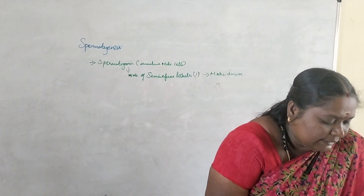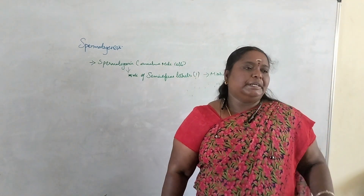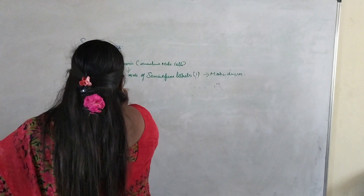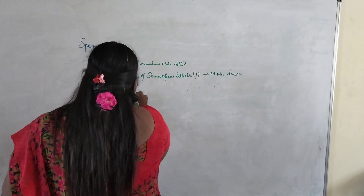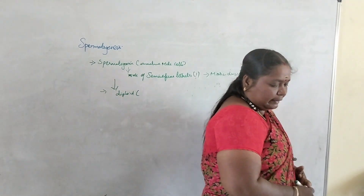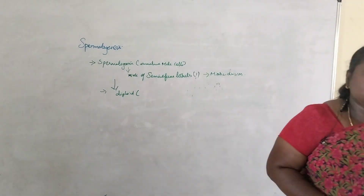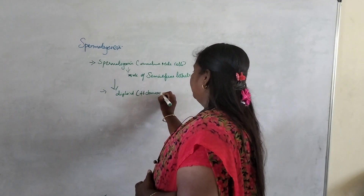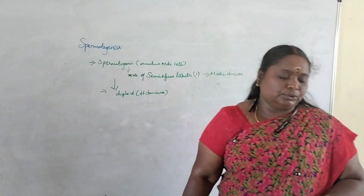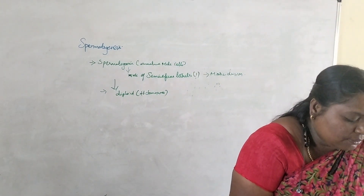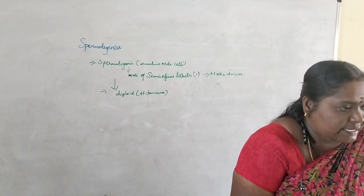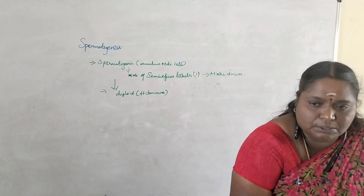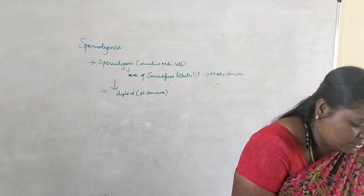Each spermatogonium is diploid, containing 46 chromosomes. Diploid means having two sets. Each spermatogonium contains 46 chromosomes. Some spermatogonia are considered to differentiate into primary spermatocytes.